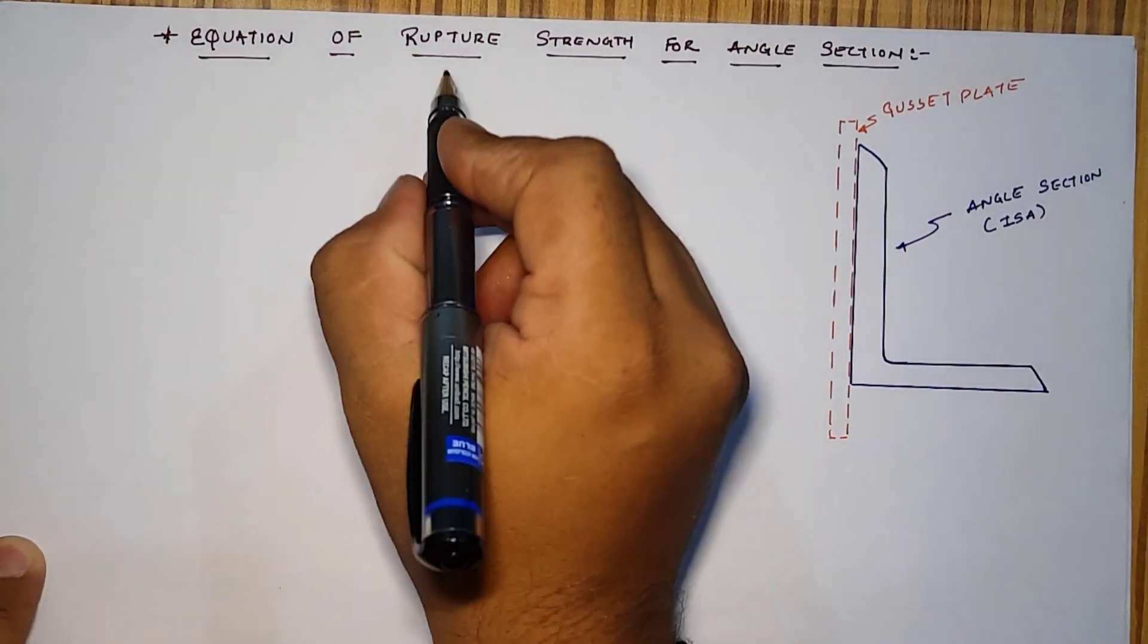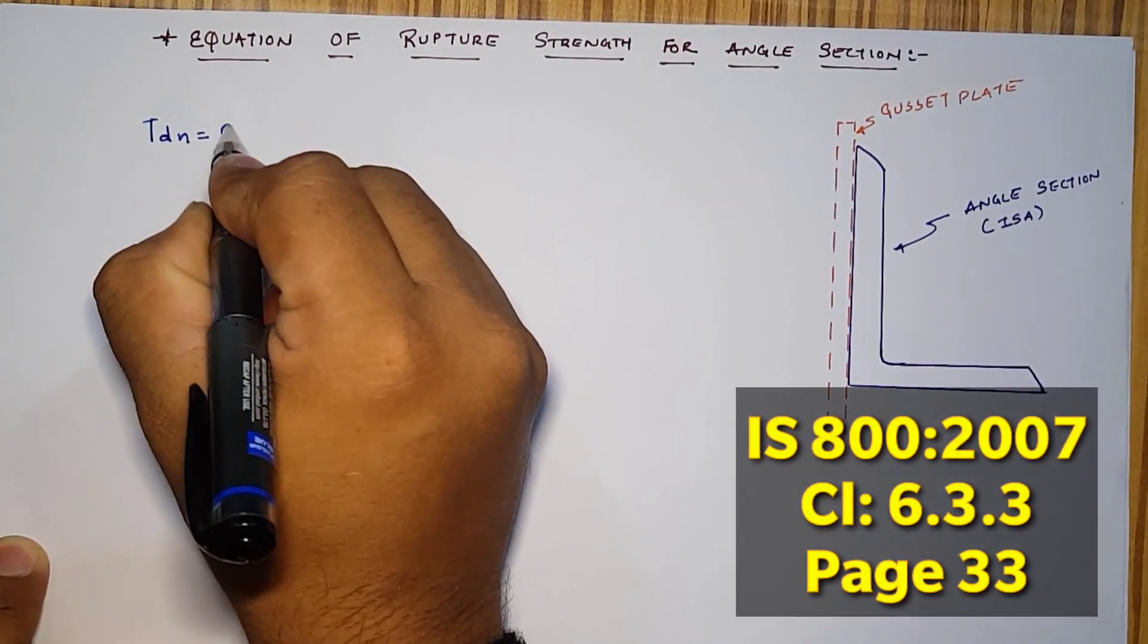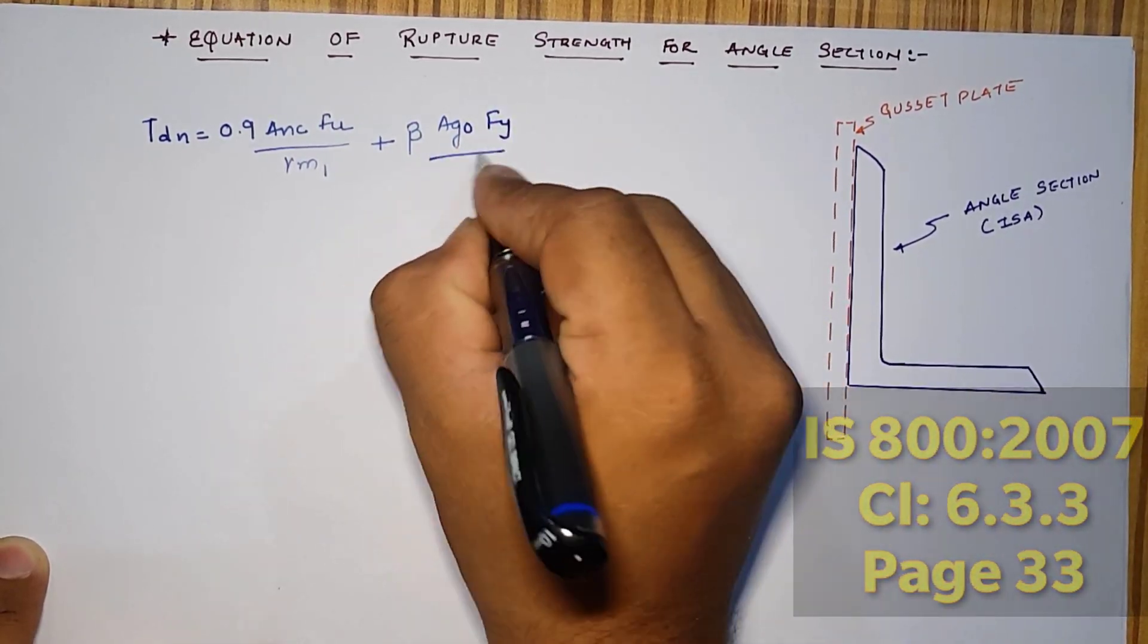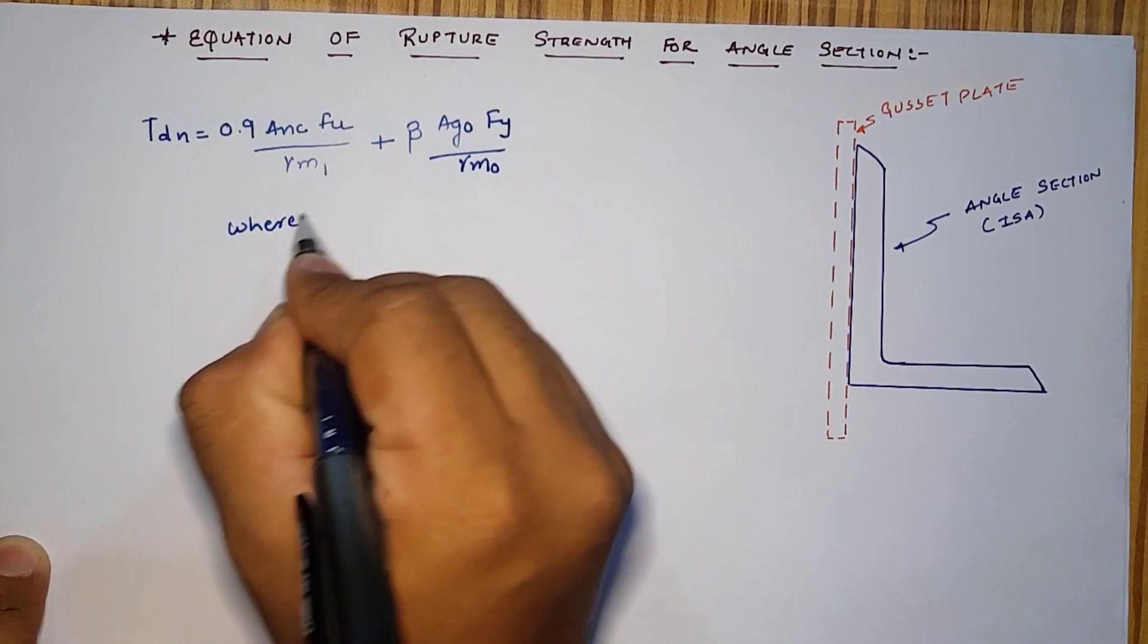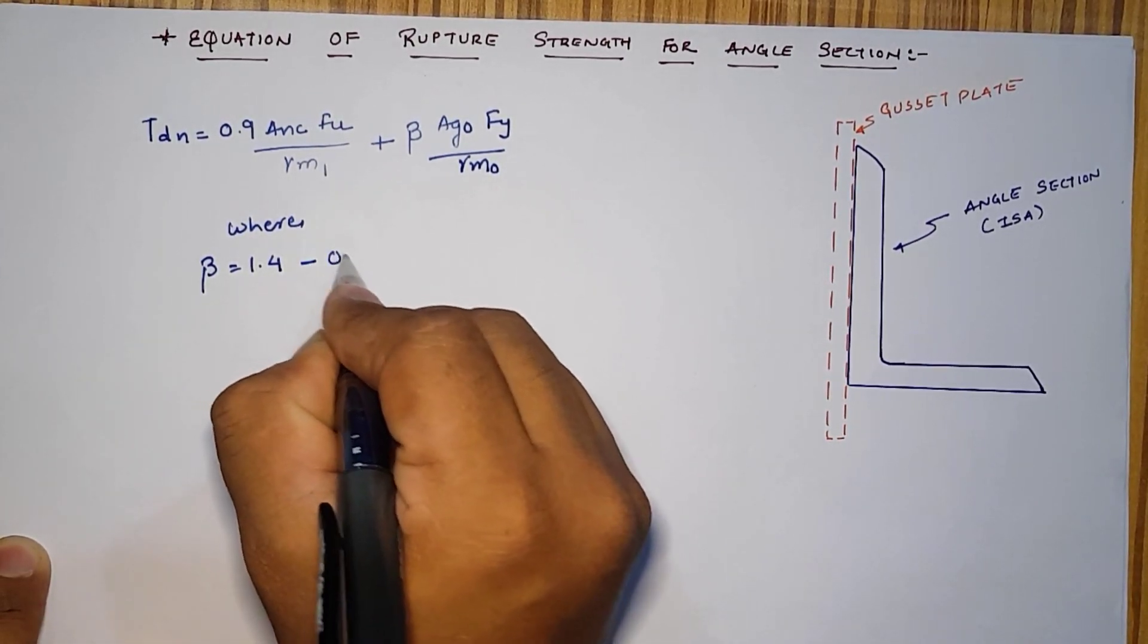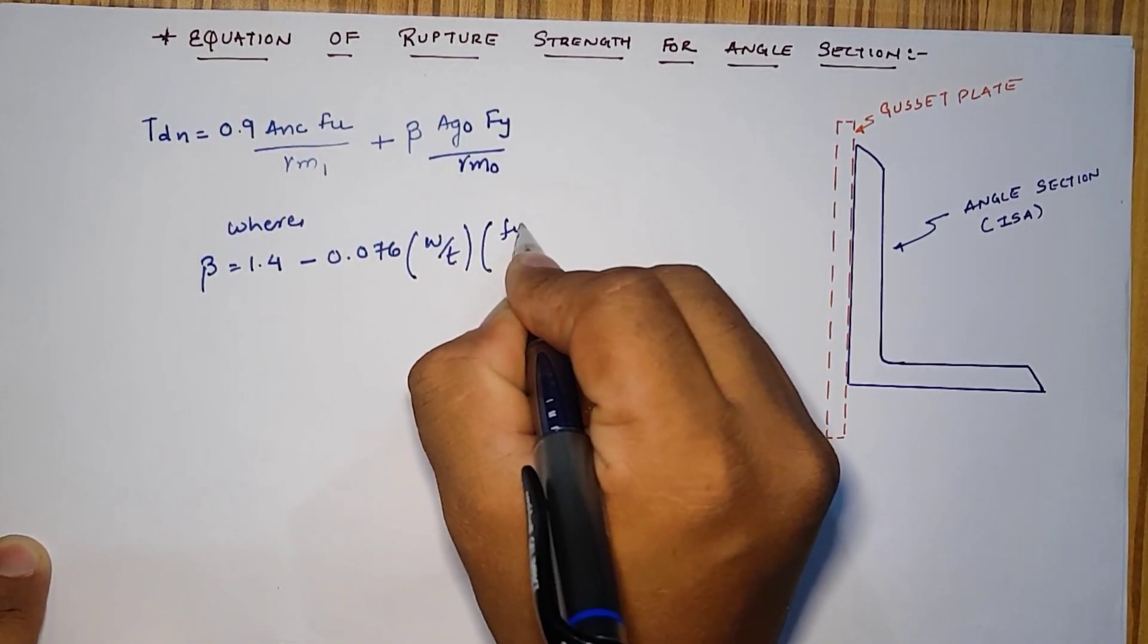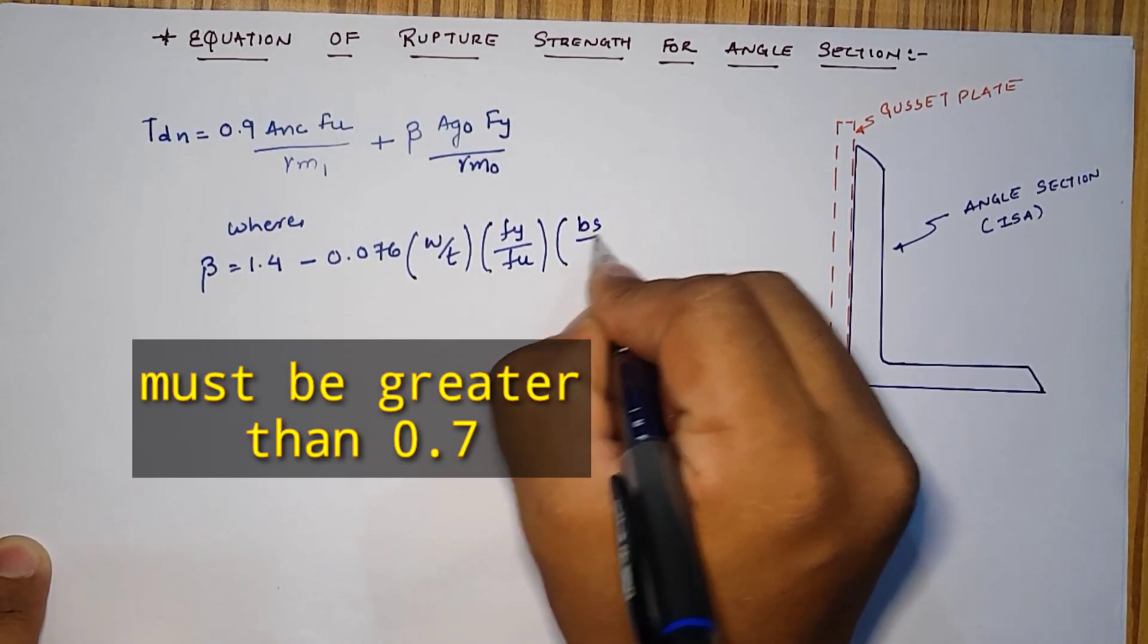The equation for rupture strength is given as Tan equals 0.9 Anc Fy over gamma m1 plus beta Ago Fy over gamma m0, where beta equals 1.4 minus 0.076 times W by T times Fy by Fu times BS by LC.